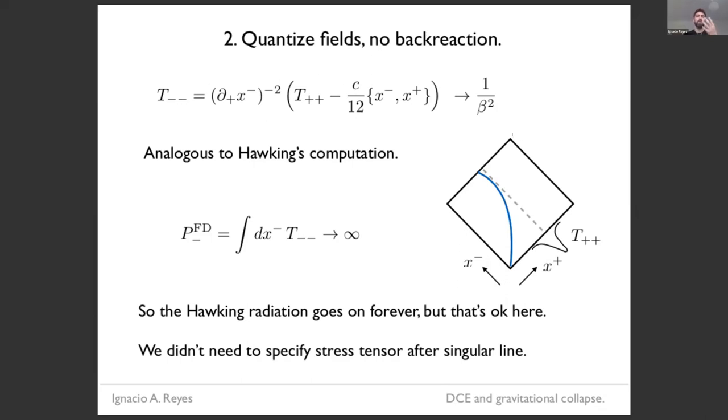Again, due to the conformal anomaly, the reflective stress sensor in the far future looks thermal. And again here, now if we compute the integrated energy, this diverges. But again, this is also fine because if you want, the evaporation is just going on forever here. So you get an infinite amount of energy in the future. So that's also fine. Now notice that because the particle, which is following the equation of motion, becomes null along this line, we never needed to specify any information about the stress sensor to the future of this line because the particle never reaches that region.